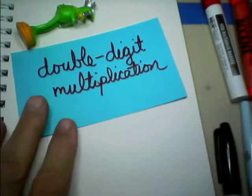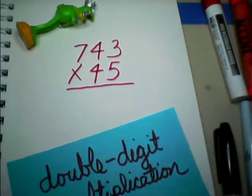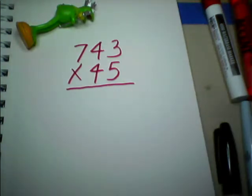It's time for another double-digit multiplication lesson, and Kermit's joining us this time. And we are going to do 743 times 45.